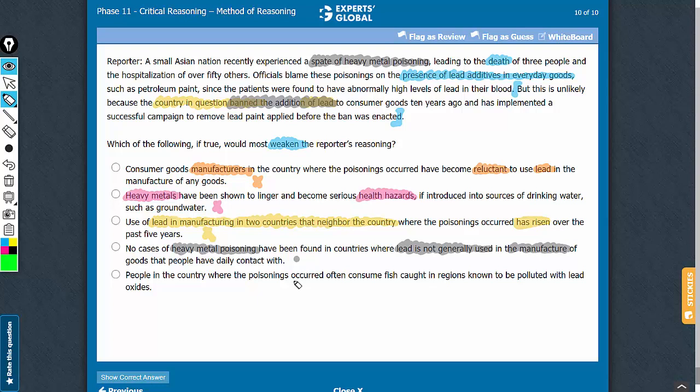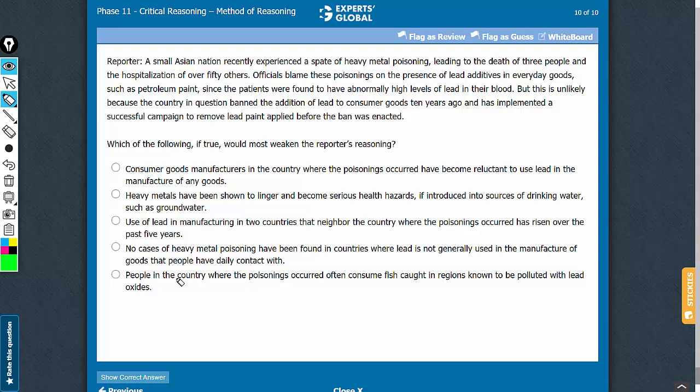Let's confirm answer choice E now. Answer choice E totally resolves it by suggesting that people in the country where poisonings occurred often consume fish caught in regions known to be polluted with lead oxides.